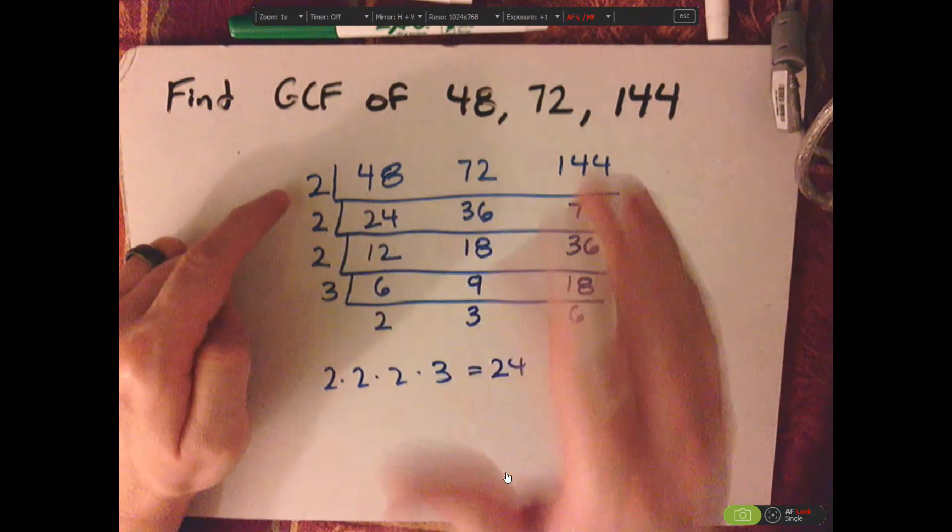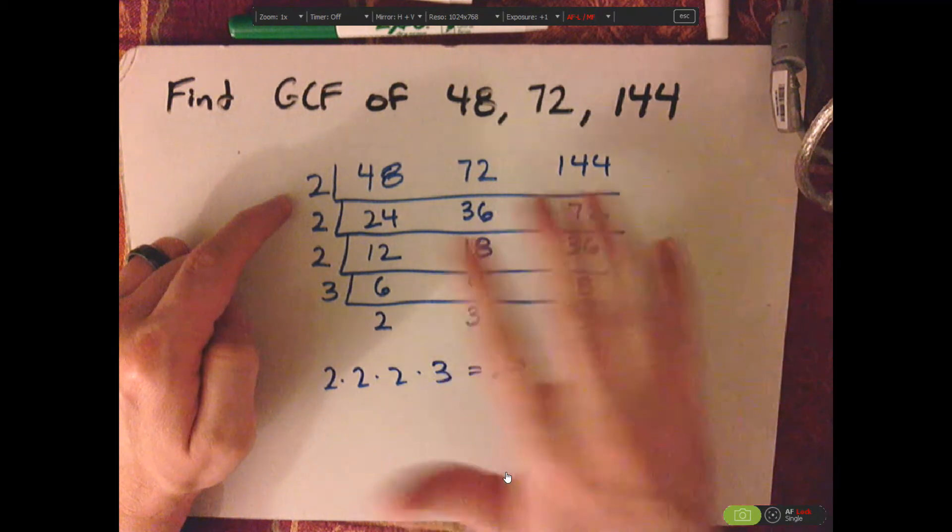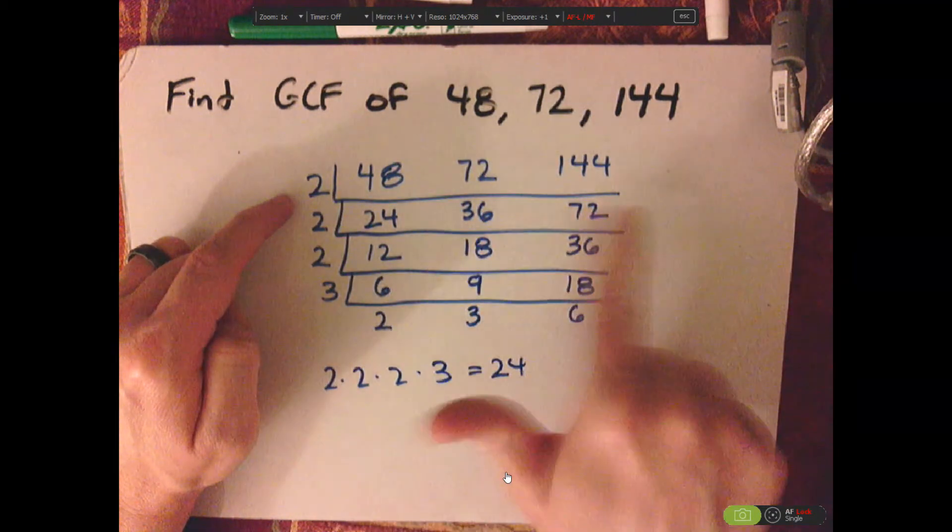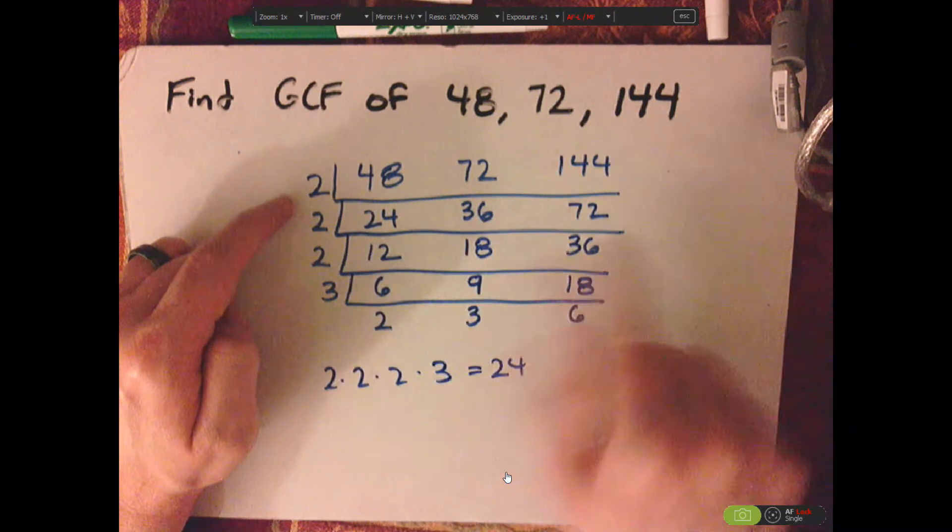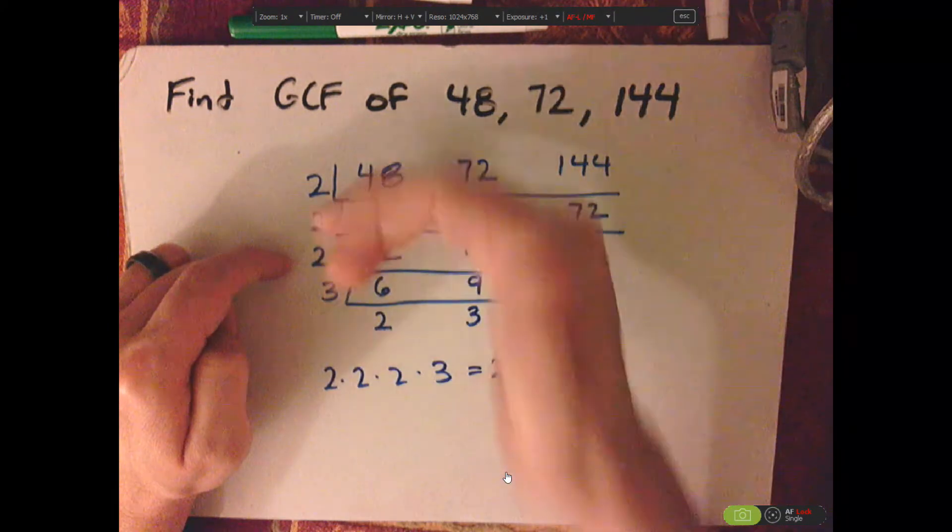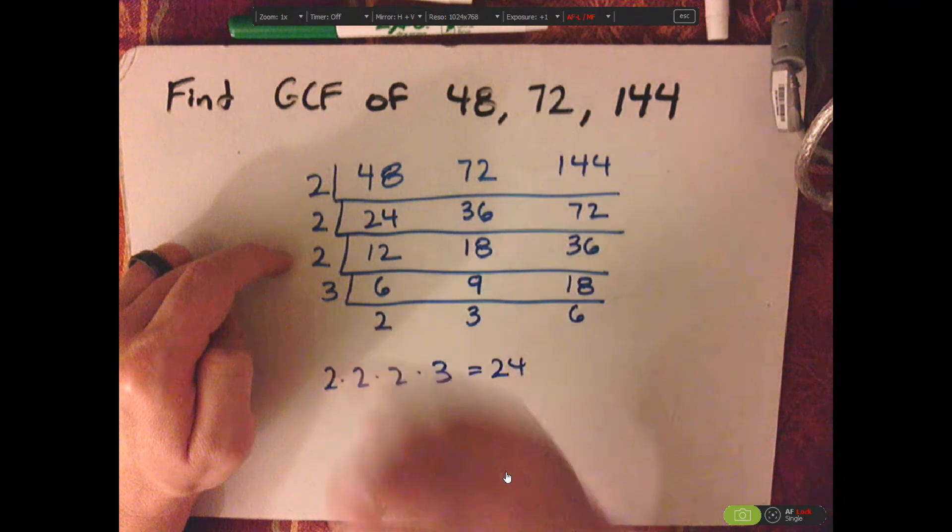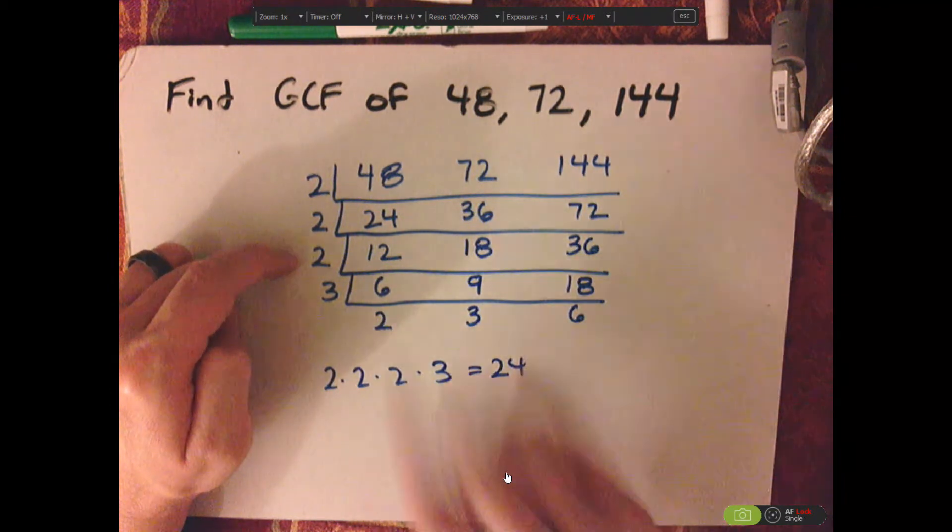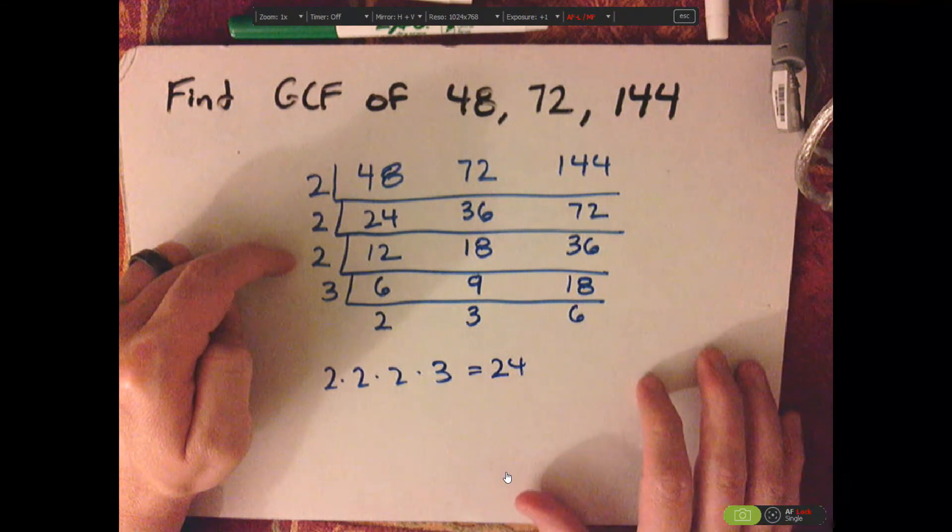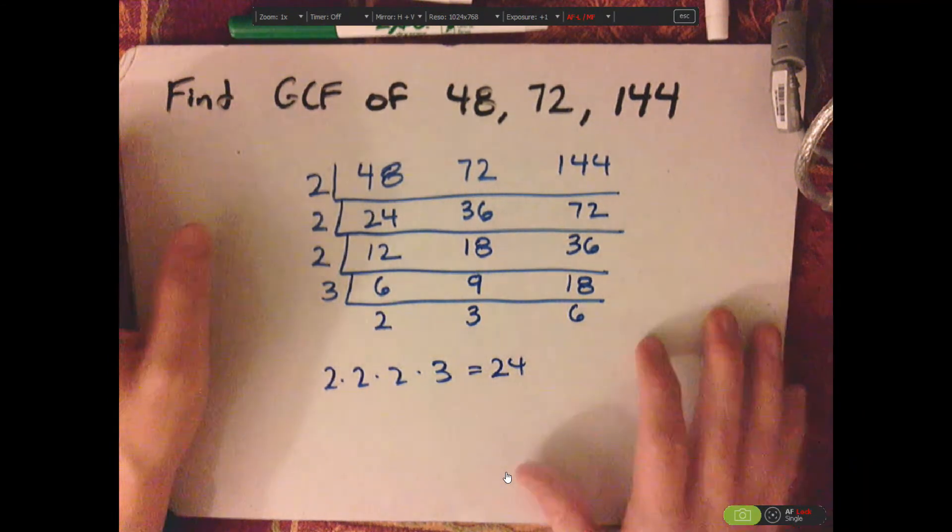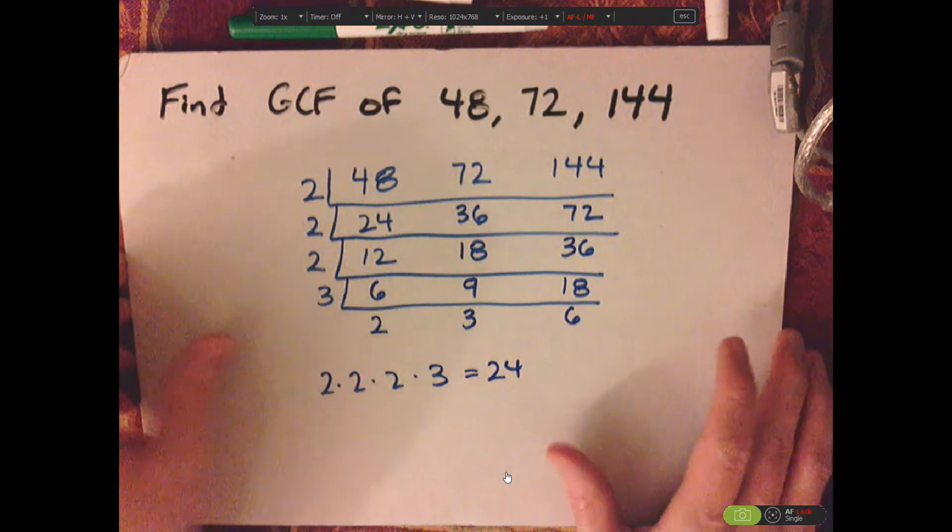You could have, just as you go through this, if you knew that all these were divisible by four, you can divide by four or six. Here I just decided to use prime numbers, but you can use any numbers that they have in common. And that's it.